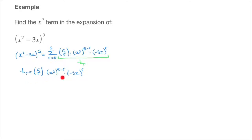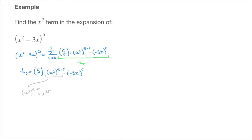Before finding the value of r, we need to simplify this a bit. In particular, we need to distribute these powers across the parentheses. Starting with the middle term: x to the power of 2, raised to the power of 5 minus r. This power of 5 minus r distributes onto the power of 2 inside those parentheses, giving x to the power of 2 times (5 minus r), which equals x to the power of 10 minus 2r.